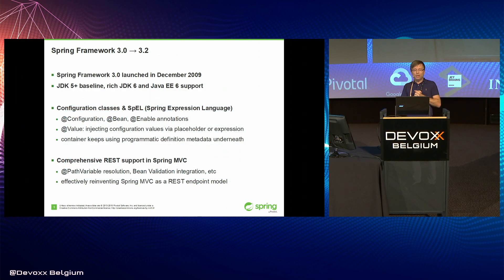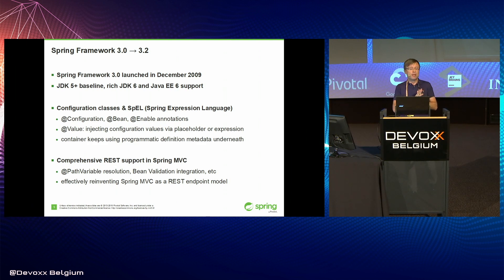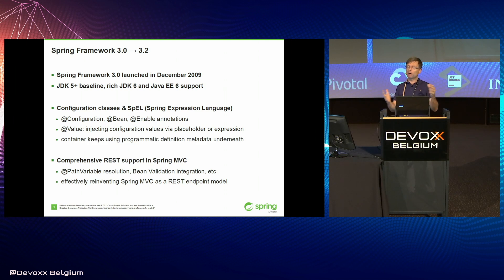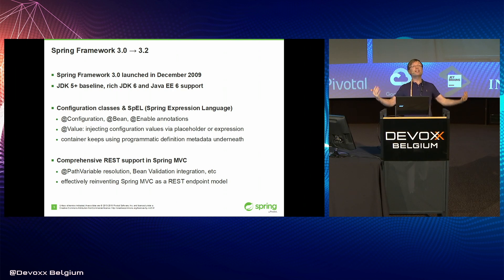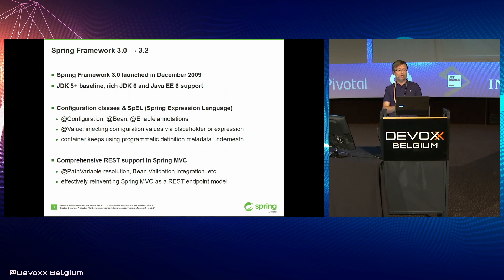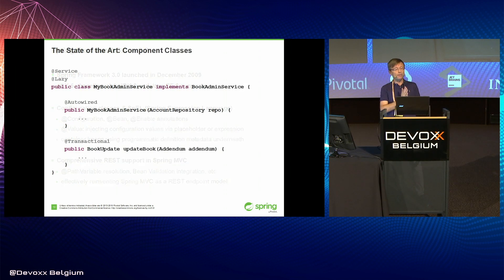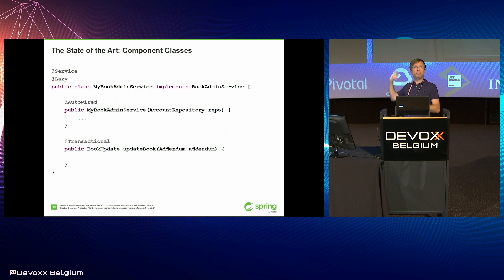This turned into Spring Framework 3.0, launched at the end of 2009 — by which time we had also been acquired by VMware. Spring Framework 3.0 is a very important release in Spring's history. It introduced many concepts still in mainstream use today: the JavaConfig prototype was merged in proper, so @Configuration, @Bean, and @Value date back to that. Spring MVC reinvented itself as a REST endpoint model — full REST support and @PathVariable all date back to Spring Framework 3.0. This model is basically nine years old now and still very much the reference point today.